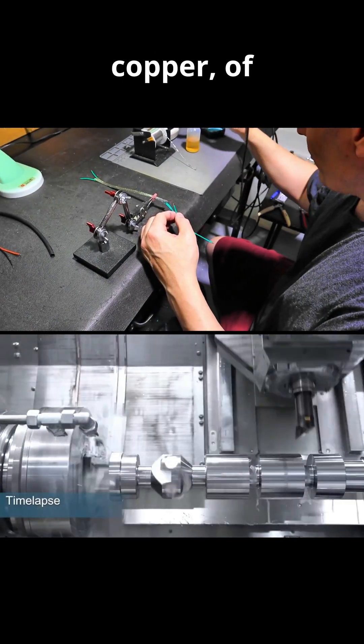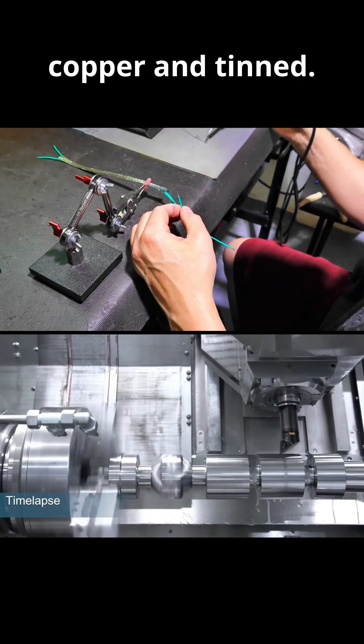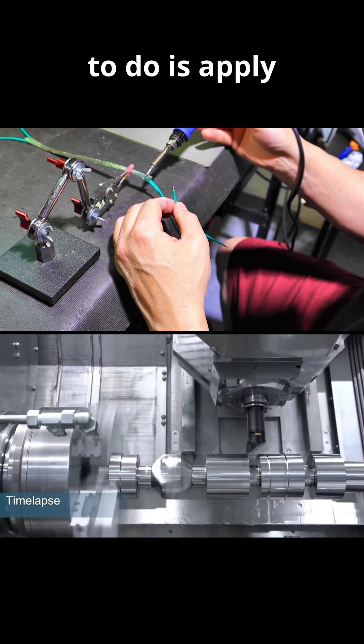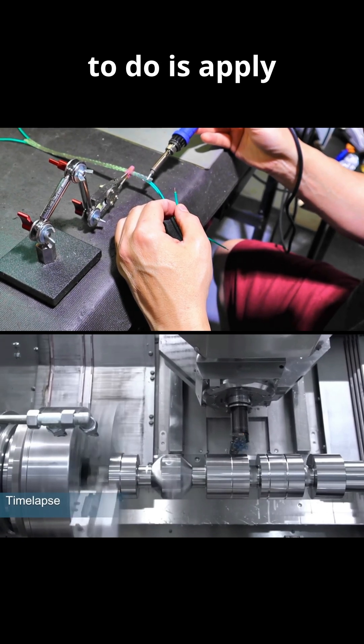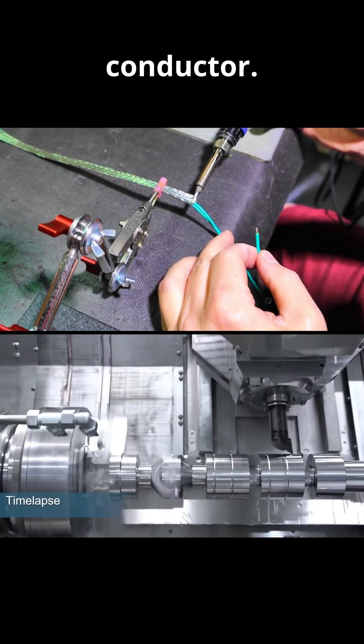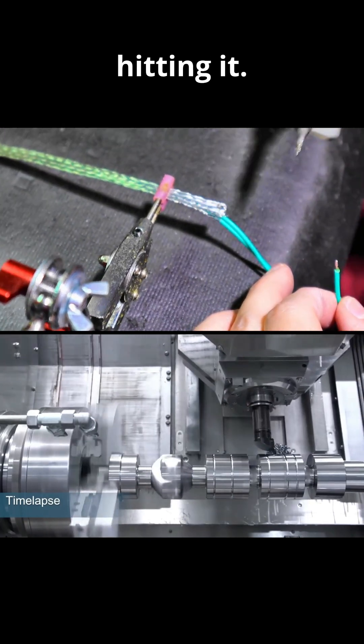Now tin-braided copper, of course, is copper and tinned. So all we got to do is apply solder right to it. Just wait, this is a much bigger conductor. So I'm just hitting it, done.